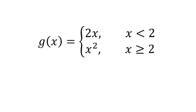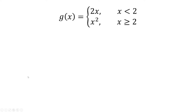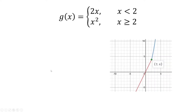In this video, we want to see if g of x is continuous or differentiable. First, let's graph this function. When x is less than 2, we have the line y equals 2x, and when x is greater than or equal to 2, we have the function y equals x squared.